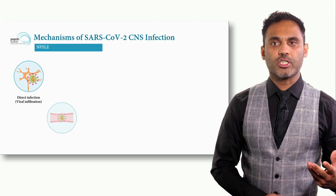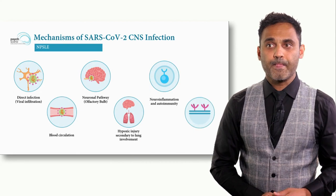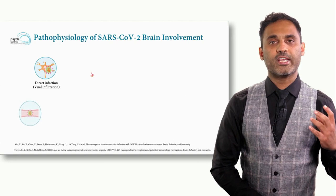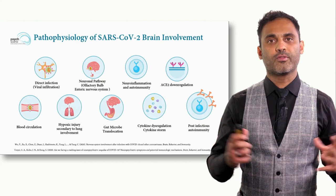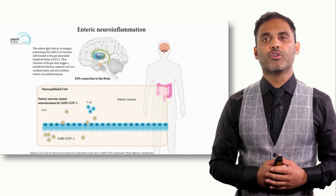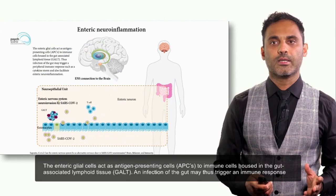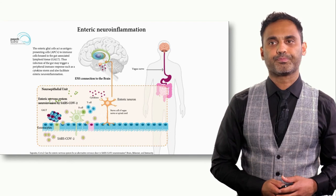The mechanisms include: direct infection, blood circulation, the neuronal olfactory bulb pathway, hypoxic injury secondary to lung involvement affecting the brain, neuroinflammation and autoimmunity, and ACE2 dysregulation affecting cardiovascular function and brain. There is also gut microbe translocation, cytokine dysregulation and cytokine storm occurring simultaneously. Enteric neuroinflammation is another important aspect — enterocytes releasing inflammatory cytokines that enter the brain through the vagal nerves.